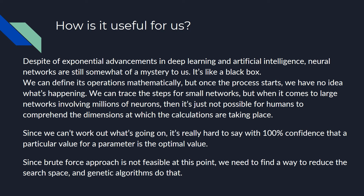So how is it useful for us? Despite a lot of advancements in deep learning and AI over the last decade, neural networks are still somewhat of a mystery — it's literally a black box. We know the equations and the mathematical operators that go into it, but once the process starts, we have no idea what's happening inside. For a small network with a layer or two and five or ten neurons, it's possible to trace the processes. But take a network involving millions of neurons — it's just not possible for the human mind to comprehend the higher dimensions at which calculations are taking place. Since we don't know what's going on, we can't say what parameters will give the optimal value, and since brute force is not feasible, we go for genetic algorithms.